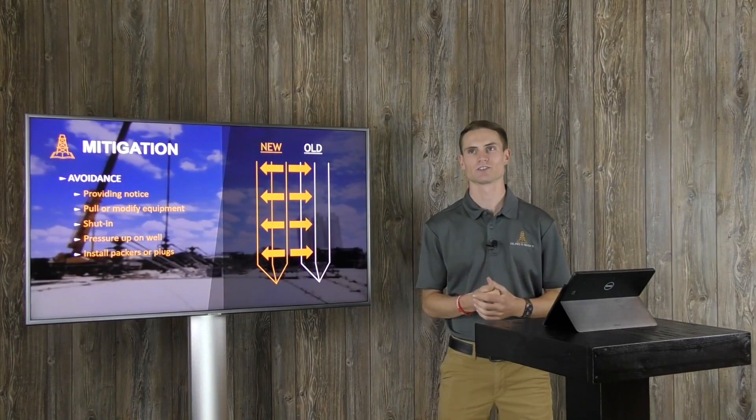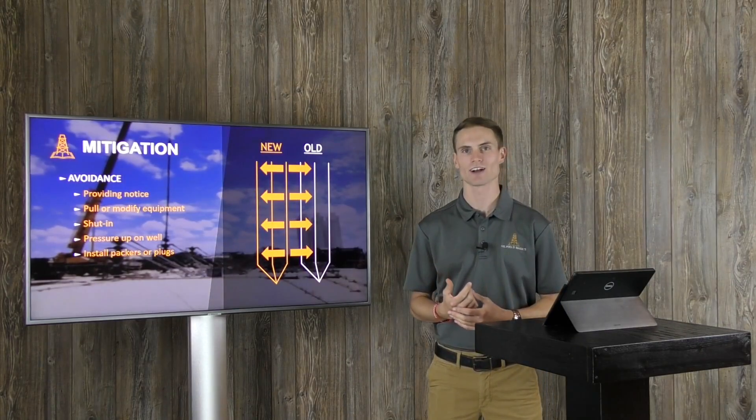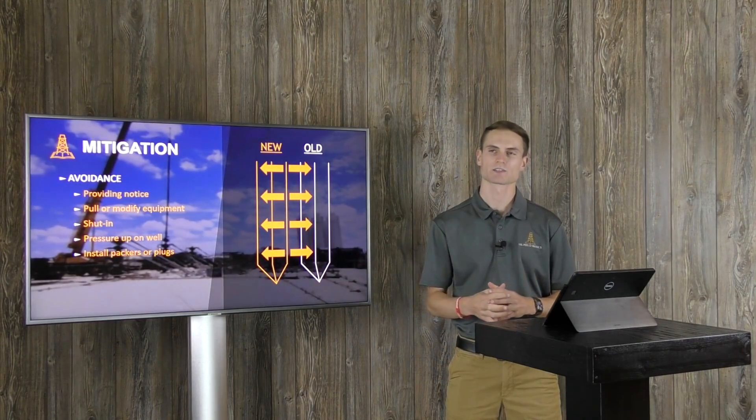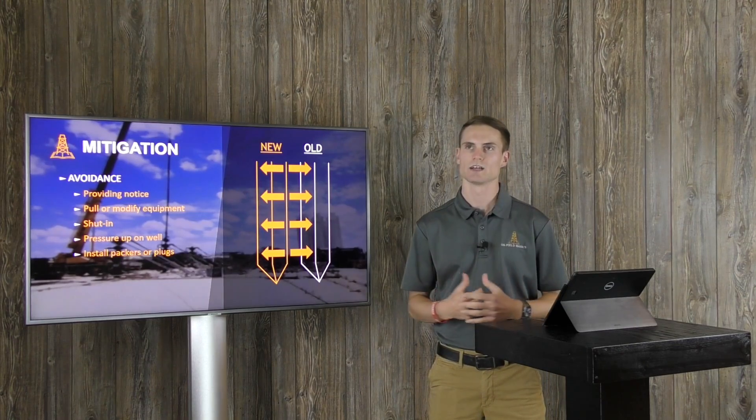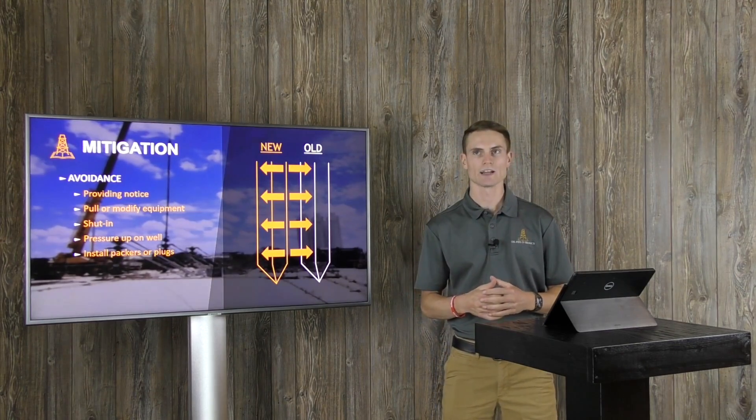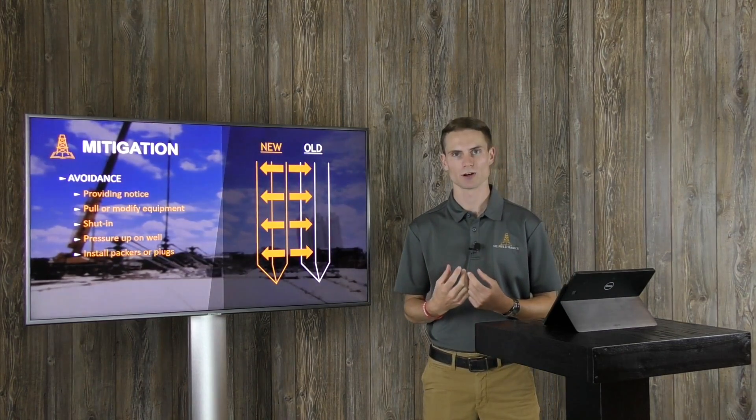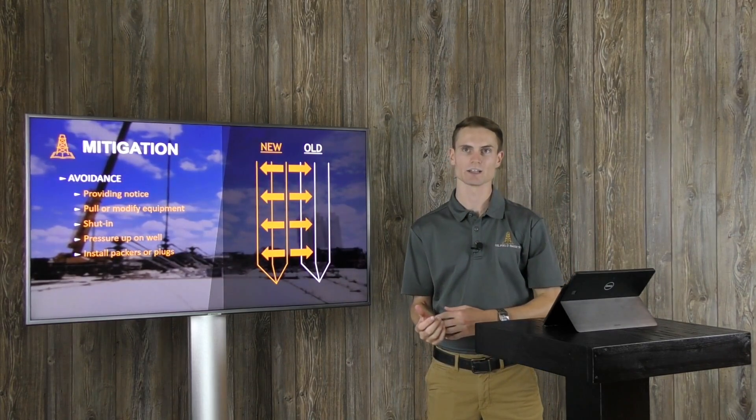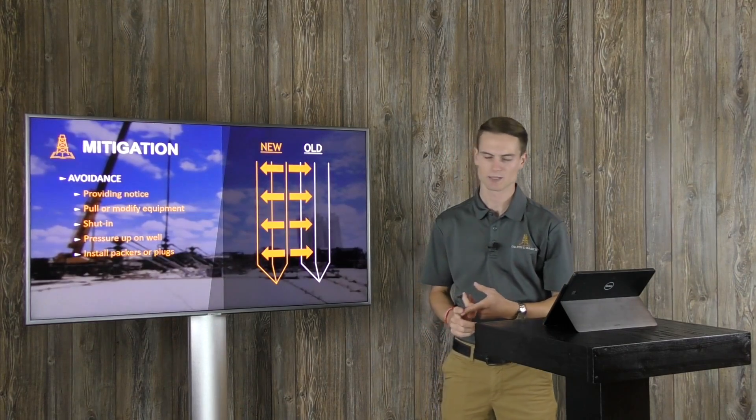So as I alluded to on the last slide, one of the effects of a frack hit can be damaging downhole equipment. So something, especially in Texas where there's a lot of rod lift and the oil plays, a lot of times operators will go ahead and pull the rod pumps out of the hole, so that they don't get damaged by potential sand influx into the offset well. So that's one thing that people do.